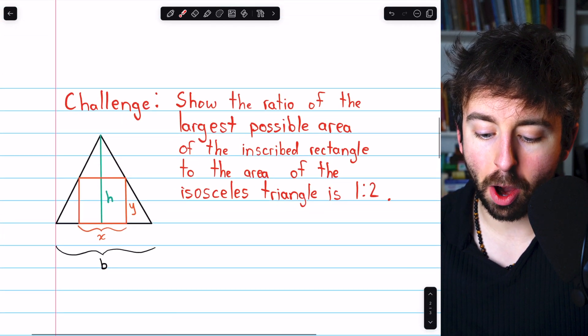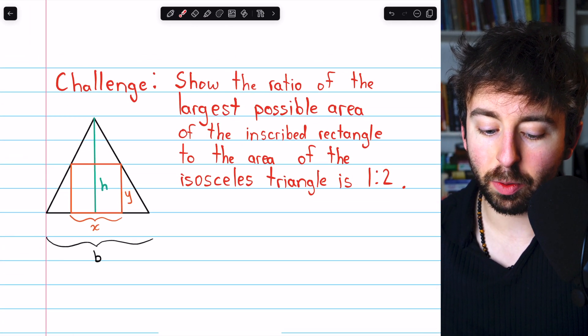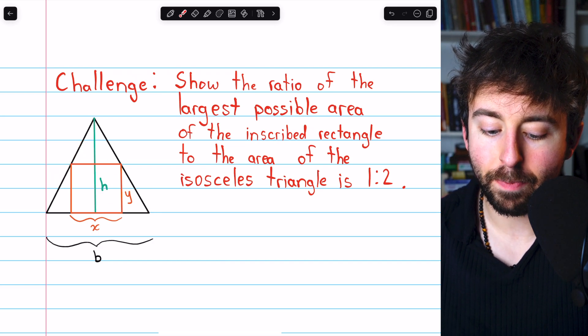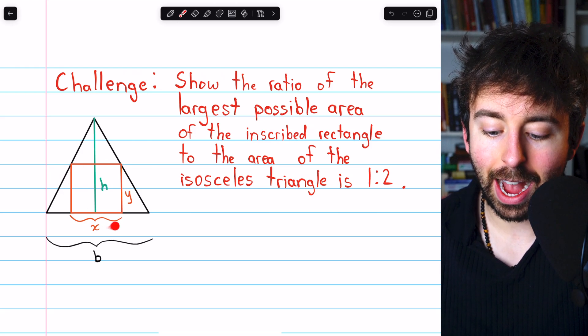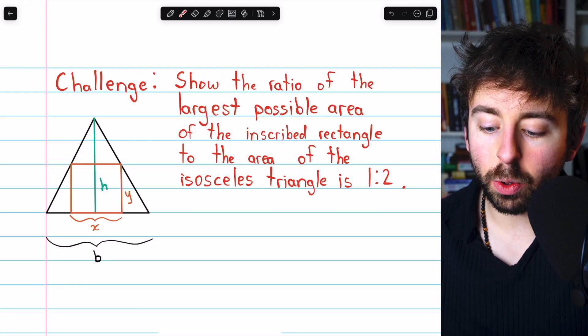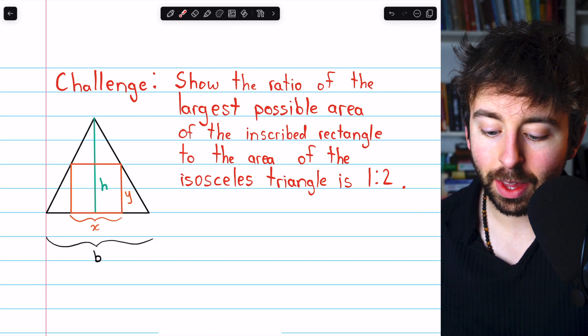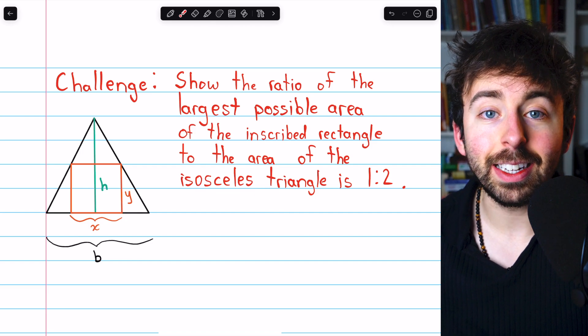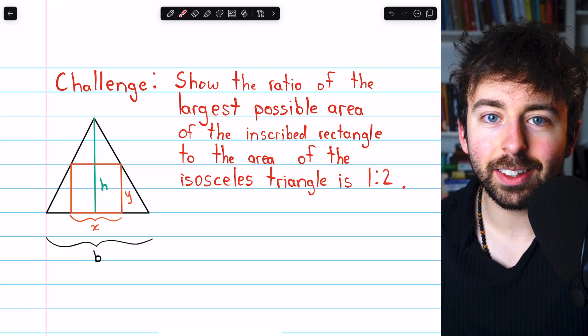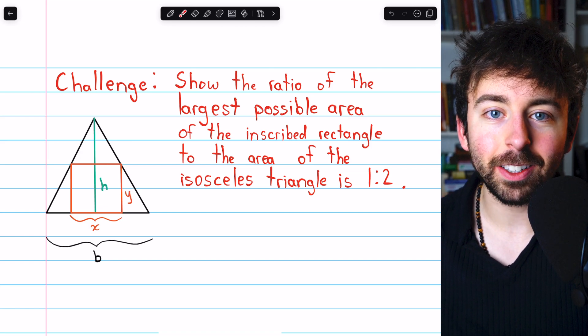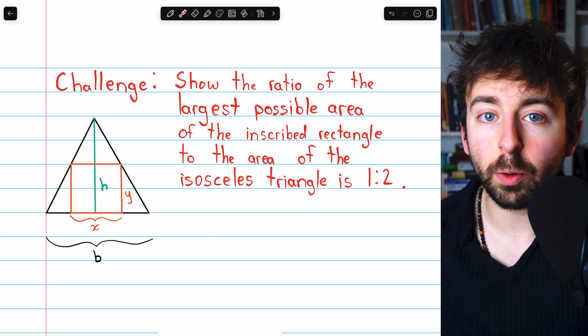Here's a challenge problem you can try on your own, just like what we did, but a little bit more general. If you have an isosceles triangle with a base b and a height h, and an inscribed rectangle with a base x and a height y, show that the ratio of the largest possible area of the inscribed rectangle to the area of the isosceles triangle is 1 to 2. The maximum area of the inscribed rectangle is half the area of the triangle. You can check the description for a link to my lesson going over this more general challenge problem.